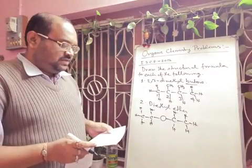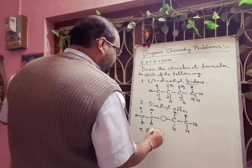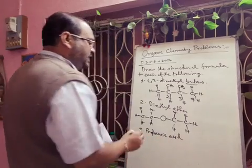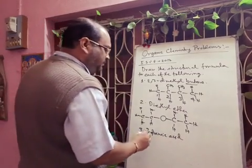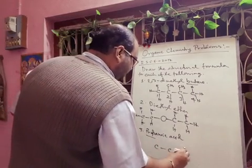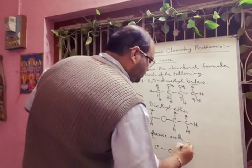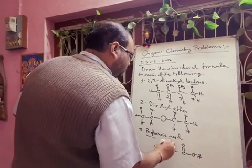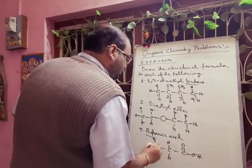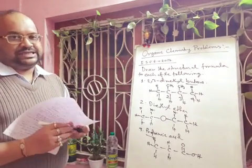Next one is propanoic acid. So here the root word is prop, which means 3 carbons: 1, 2, and 3. And there is -oic acid, which means it will be converted into a carboxylic acid group. The other carbons we have to add hydrogen to satisfy the tetravalency. So this will be the structure of propanoic acid. In this way we have to draw the structure in the exam.